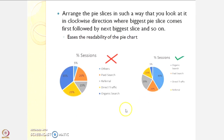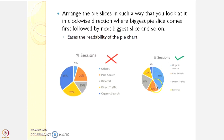Arrange the pie slices in clockwise direction where the biggest slice comes first, followed by the next biggest slice and so on. This facilitates ease in readability of the pie chart.